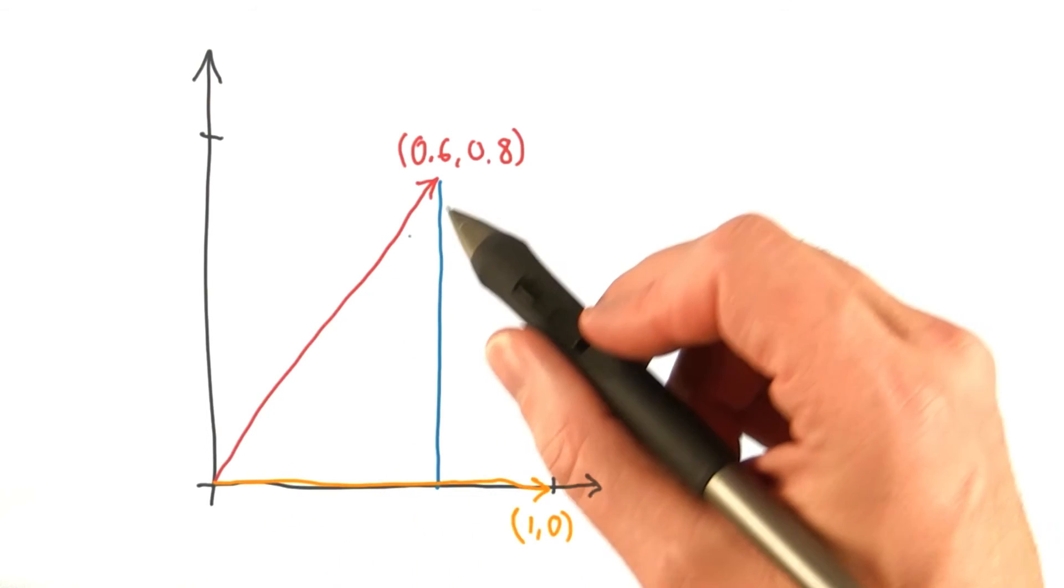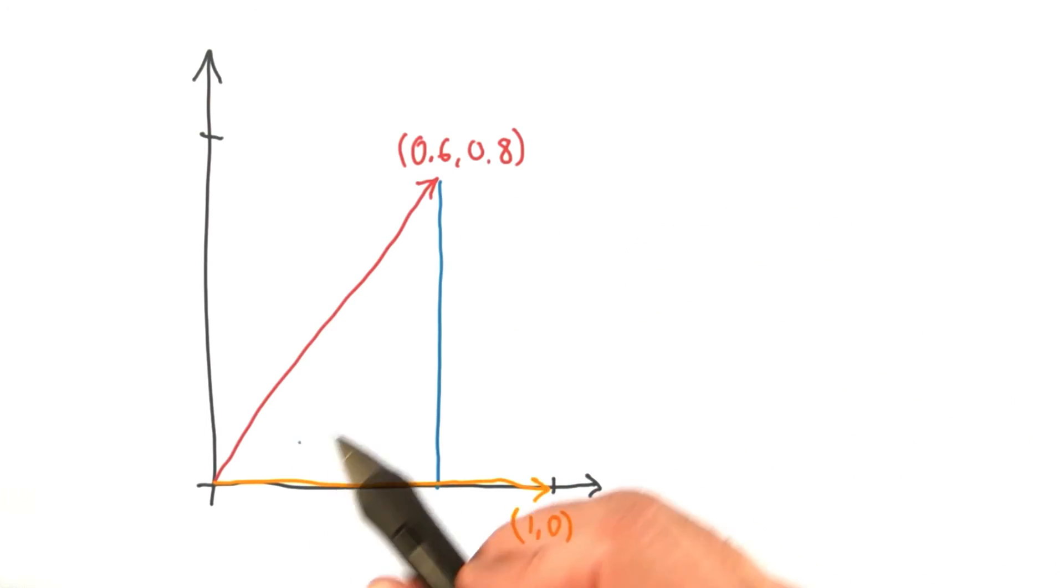So for 0.6, 0.8, the vector extends 0.6 along our initial vector. Another way to say this is that one vector projects onto the other vector to give this distance.